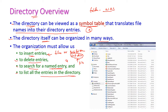Here we have a sample directory taken from the Windows operating system. From the C disk we have Program Files, and within that we have Office. Office is a subdirectory. From Office we have Templates as a subdirectory, and 1033 is another subdirectory. Inside 1033 we have several files. So here, three entries are directories and all the others are files.